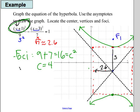So 1, 2, 3, 4. There's my foci. And 4 below my center: 1, 2, 3, 4. There's my other foci.